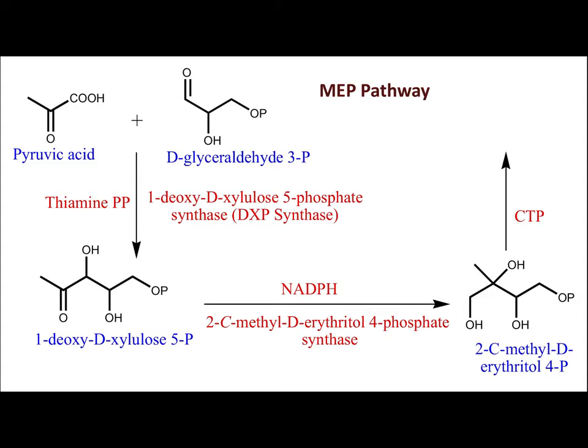The next enzyme in action is methylerythritol phosphate synthase — more precisely, 2C-methyl-D-erythritol 4-phosphate synthase. It requires NADPH as a cofactor. This reaction does not occur in a single step; there is an intermediate involved. The product formed is methylerythritol phosphate, or in full, 2C-methyl-D-erythritol 4-phosphate (MEP).